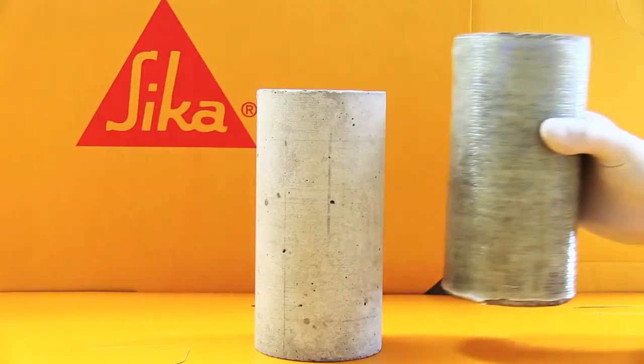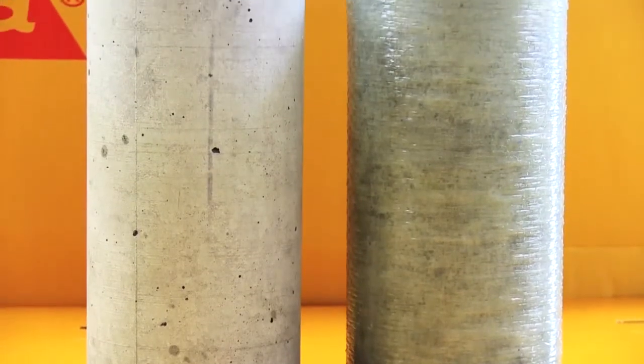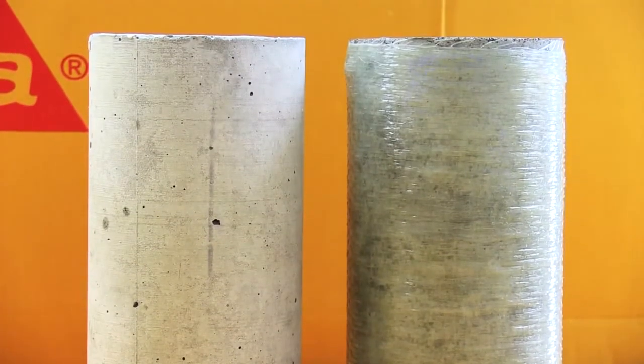To help show this, we set up a simple demonstration in the Seeker Laboratory. First we took two concrete columns, identical in their size, weight and compressive strength. The only difference being that one had been wrapped with Seeker Wrap.